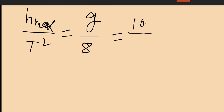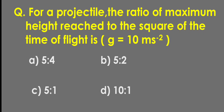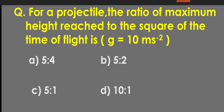Putting the value of G as 10, we get 10 divided by 8. Simplifying, 2 goes into 8 four times and 10 gives 5, so the ratio is 5:4. The ratio of maximum height to the square of time of flight is 5:4, so the correct option is A.